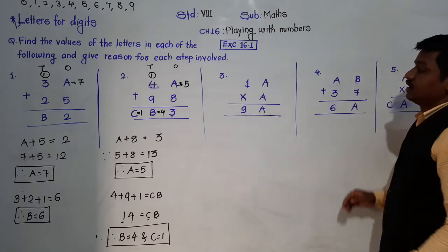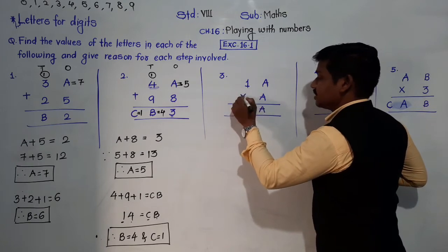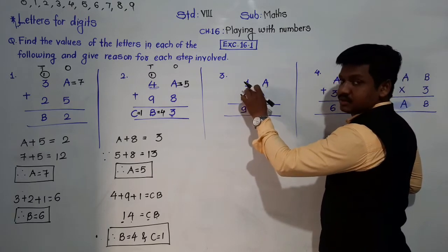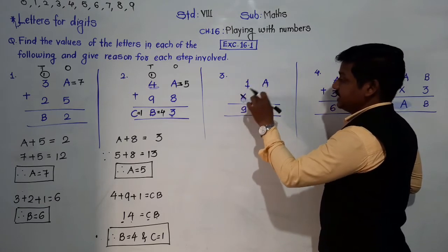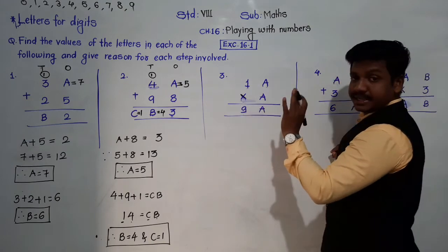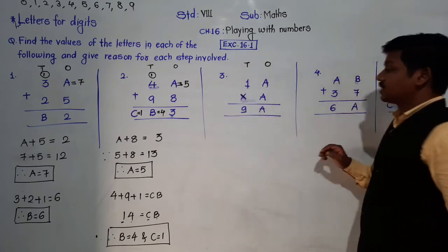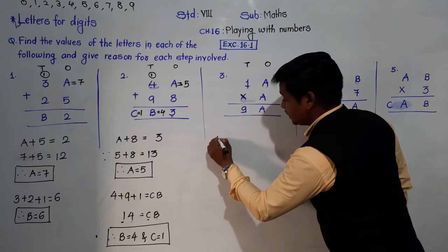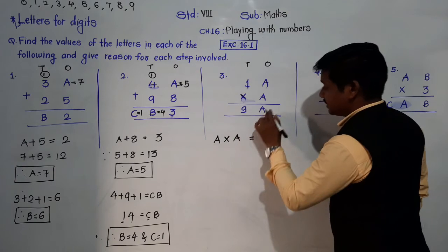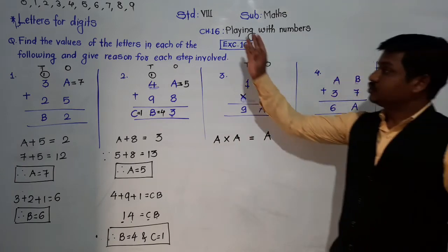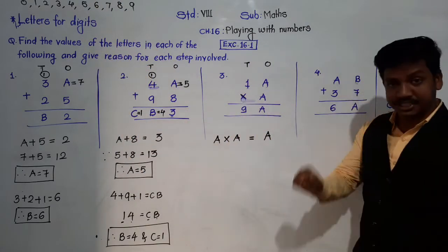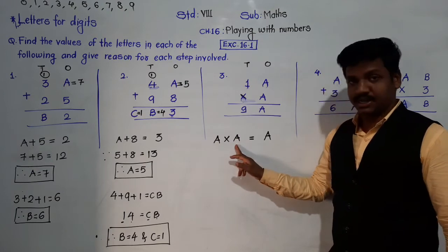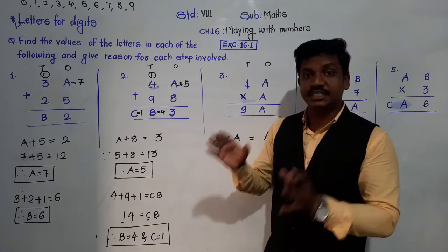Example 3 is multiplication: 1A × A = 9A. This is a 2-digit number between 10 and 20, multiplied by A, giving 9A. We multiply the 1's place first: A × A. In the 1's place of the answer, there is also A. So we need to find a digit where A × A ends in A. Let's check all 10 digits.